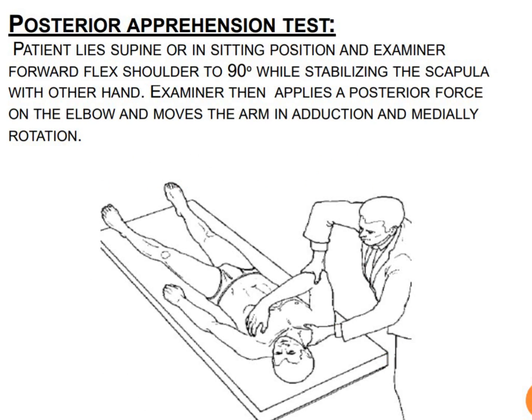The next test is the posterior apprehension test. The patient lies supine or sits. The examiner flexes the shoulder forward to 90 degrees and the elbow to 90 degrees, stabilizing the scapula with one hand. The examiner then applies a posterior force toward the shoulder joint — toward the ground in supine — and moves the arm into adduction and medial rotation. This is the posterior apprehension test for posterior instability of the shoulder.